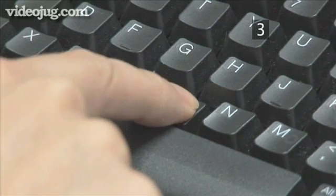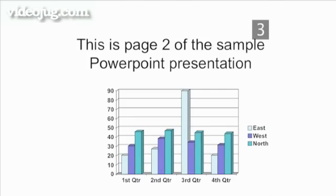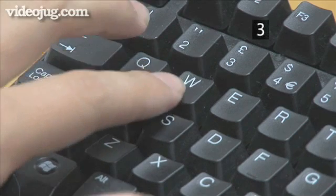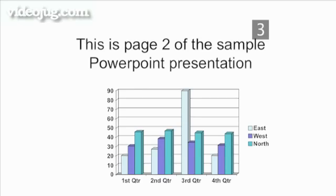Press B to pause the slideshow and display a black screen. Press B again to resume the slideshow. Press W to pause the show and show a white screen. Press W again to resume the show.